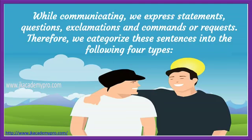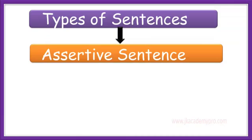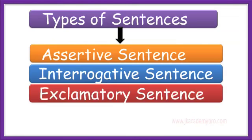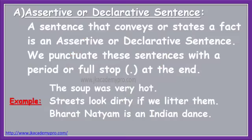Therefore, we categorize these sentences into the following four types: assertive, interrogative, exclamatory, and imperative sentences. Now let's understand each of them in detail.